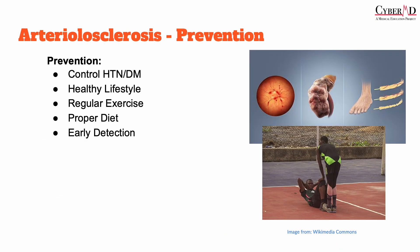To prevent the development of arteriolosclerosis, it's essential to control hypertension and diabetes, the two primary causes of these conditions. Maintaining a healthy lifestyle — regular physical activity, a balanced diet, and stress management — can all help prevent the development of these conditions.